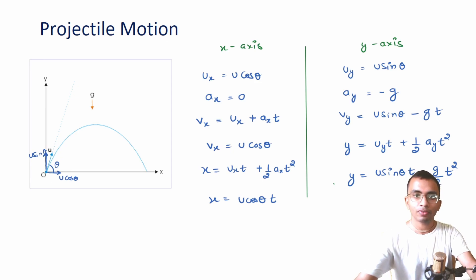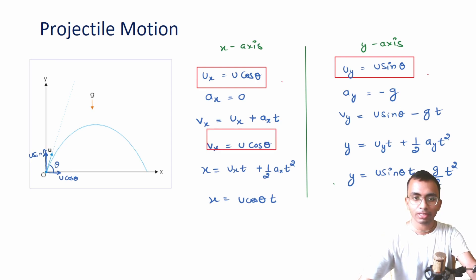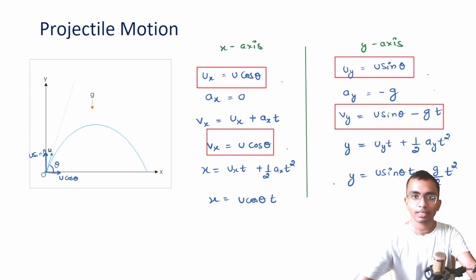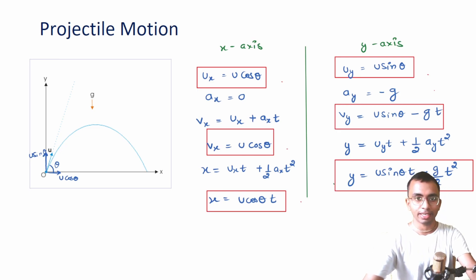So, till now we got the initial velocity along the x-axis, initial velocity along the y-axis, velocity along x-axis as a function of time which remains constant at u cos theta, velocity along y-axis as a function of time, the x coordinate as a function of time (displacement along x-axis), and displacement along y-axis as a function of time.